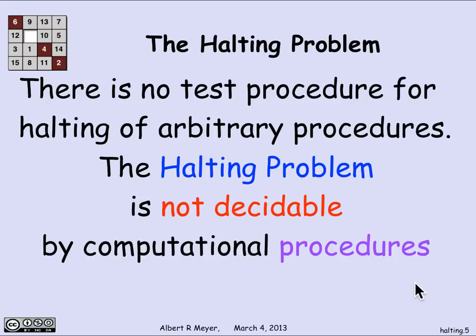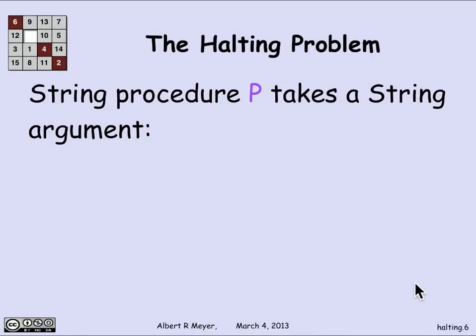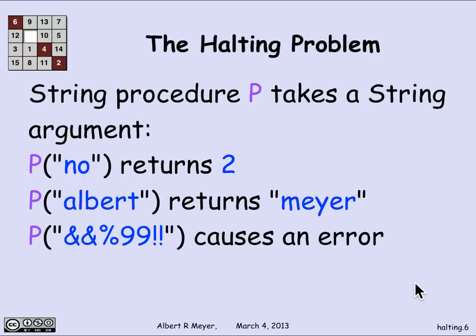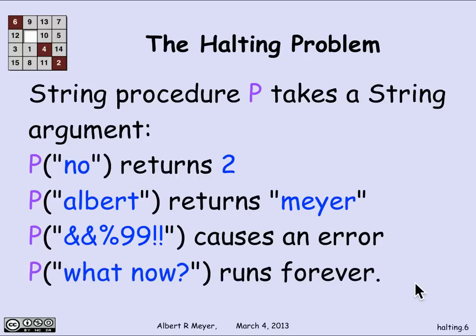What I'm going to argue is that the halting problem is not decidable. That is, there's no procedure which, given an input that describes a procedure, can figure out what its input is doing. Let's look at that in more detail. Let's think about string procedures — procedures represented by ASCII strings that take a string argument. An example: procedure p applied to the string 'no' returns 2, applied to 'Albert' returns 'Meyer', applied to some weird symbols causes an error, and applied to 'what now' runs forever. These illustrate the kind of behavior a string procedure might exhibit.